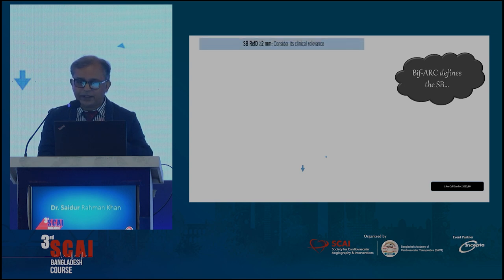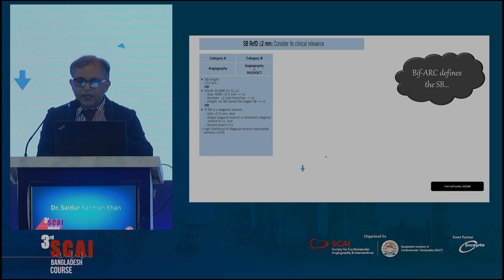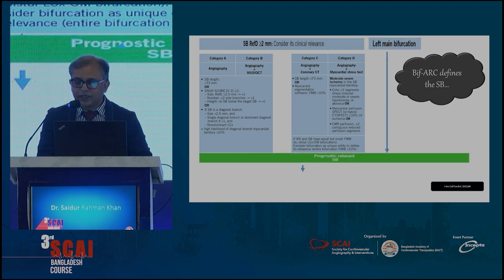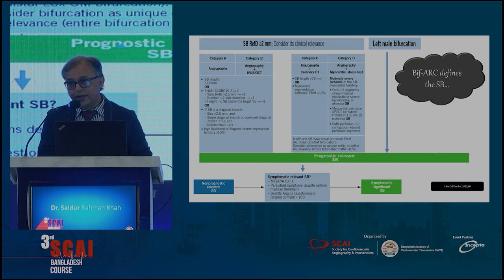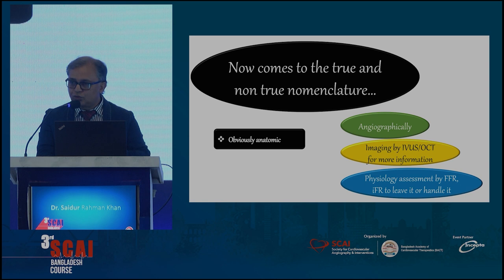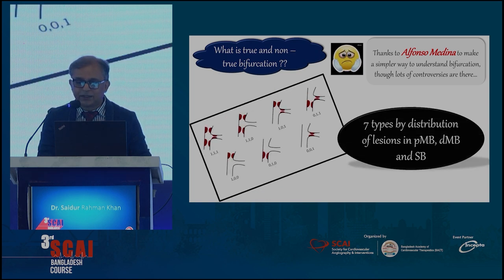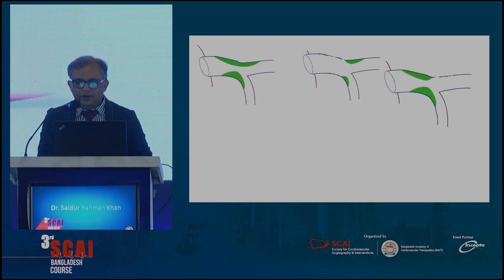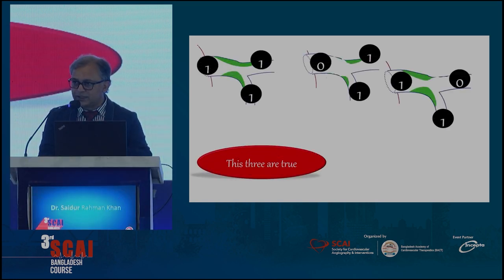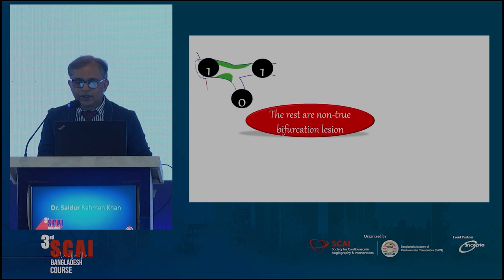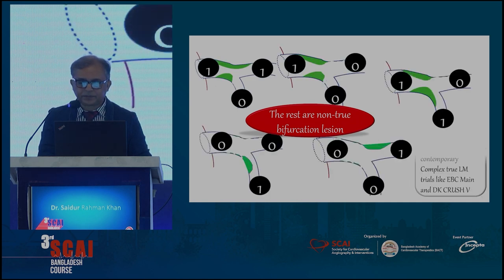The bifurcation arc defines the side branch beautifully: more than two millimeters is considered clinically relevant. You also have the SNUH score for assessing side branch relevance. For left main, of course, the side branch is always relevant. Regarding the true and non-true nomenclature, thanks to Alfonso Medina, it is simplified into seven types of distribution. Among these, three are true bifurcation lesions, except 1-0-1 which is not considered a true bifurcation by EBC main and DK crush criteria.